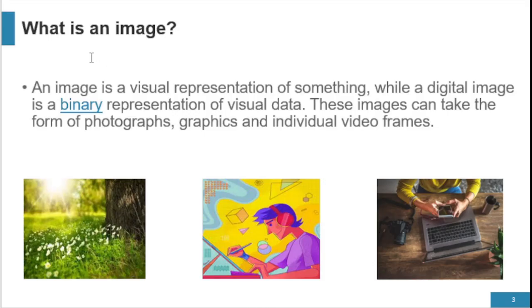What is an image? An image is a visual representation of something, while a digital image is a binary representation of visual data. These images can take the form of photographs, graphics, or individual video frames.